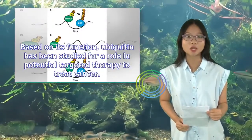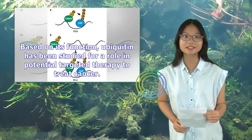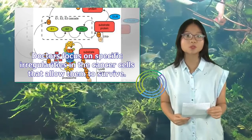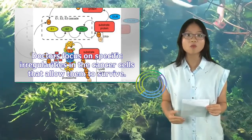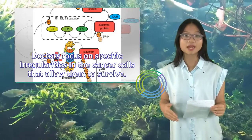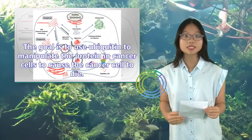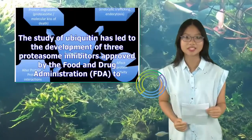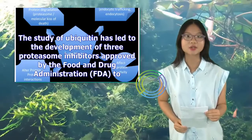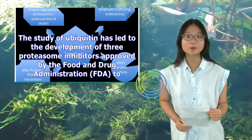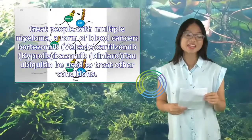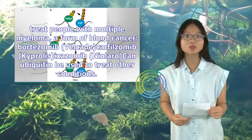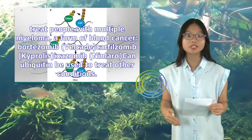Why is ubiquitin important? Based on its function, ubiquitin has been studied for a role in potential targeted therapy to treat cancer. Doctors focus on specific irregularities in cancer cells that allow them to survive, with the goal of using ubiquitin to manipulate proteins in cancer cells to cause those cells to die. Ubiquitin has led to the development of three proteasome inhibitors approved by the FDA to treat multiple myeloma, a form of blood cancer: Bortezomib (Velcade), Carfilzomib, and Ixazomib (Ninlaro).